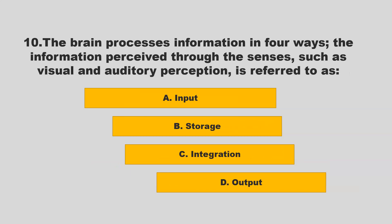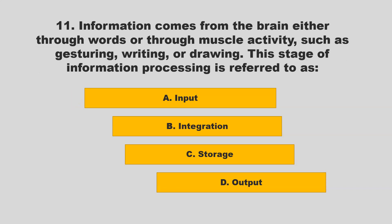The brain processes information in four ways. The information perceived through the senses, such as visual and auditory perception, is referred to as: A) input; B) storage; C) integration; D) output. If you chose A — input — you are correct.